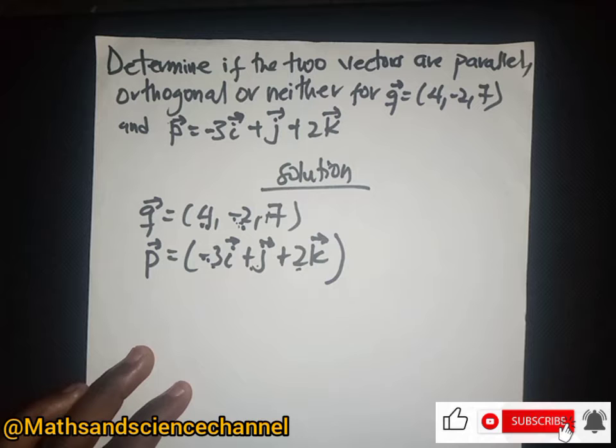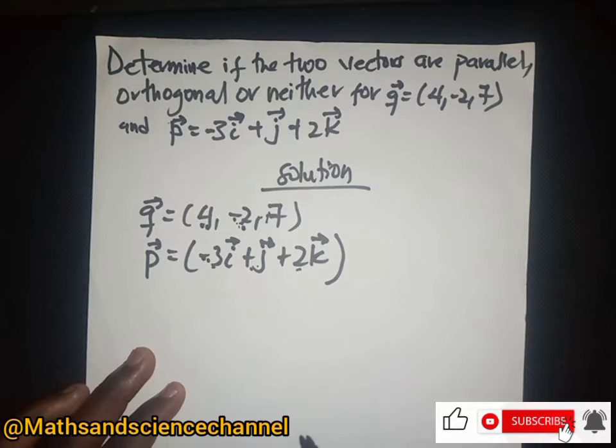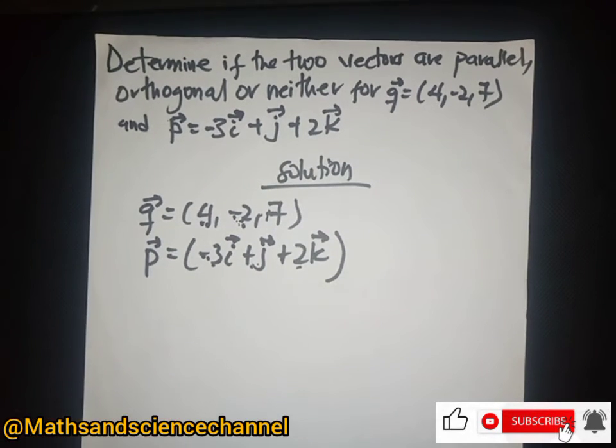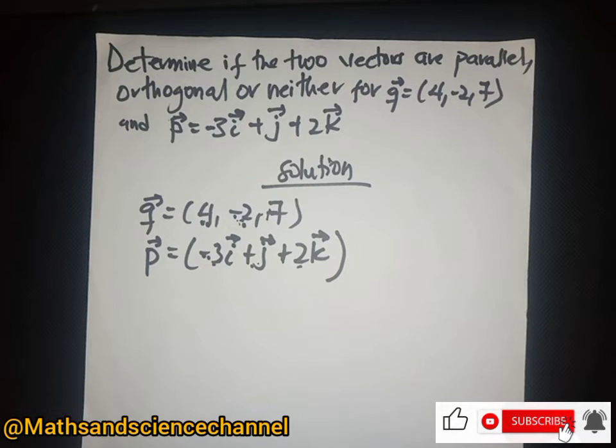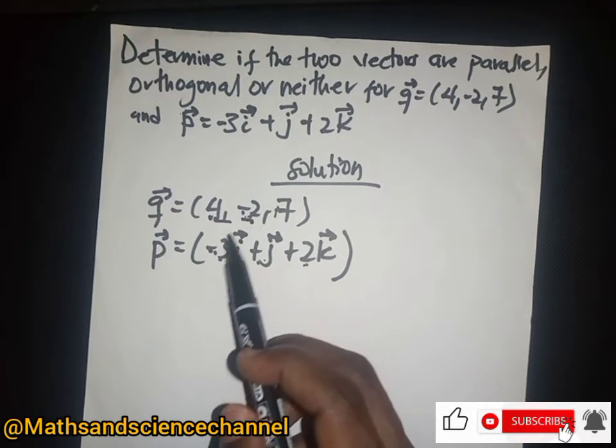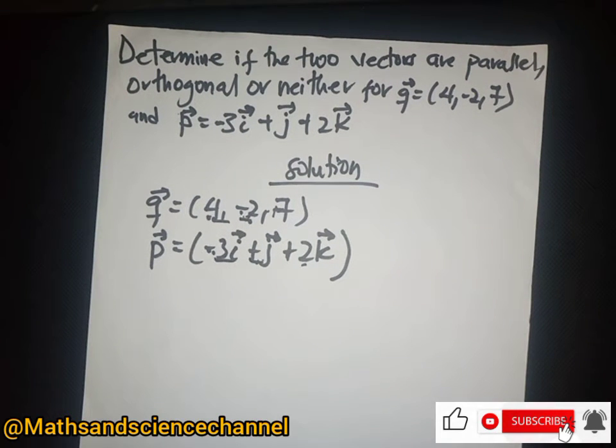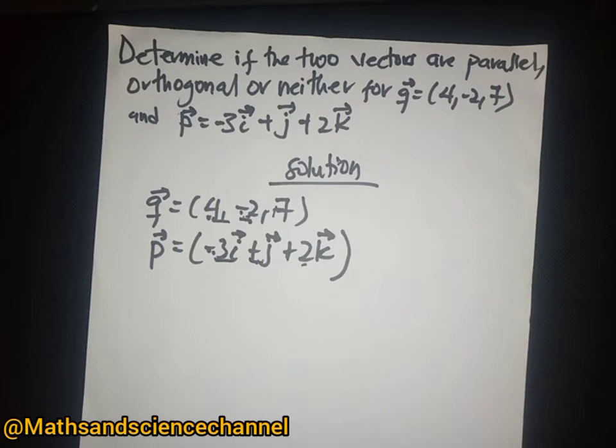If I multiply a scalar by these two vectors, there is no number that will change the sign on the first two components. Therefore, we can conclude that the two vectors are not parallel.